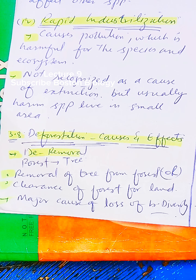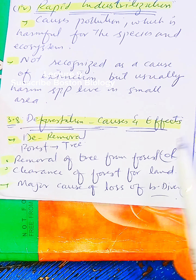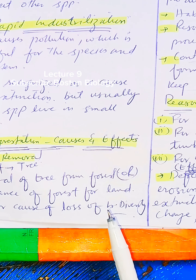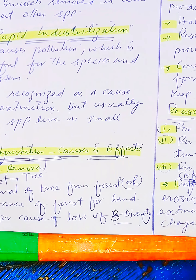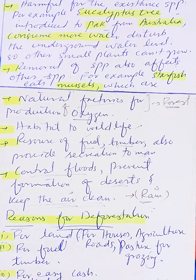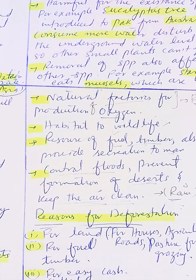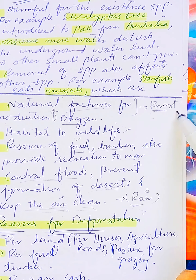The removal of trees is because of wood. The major effect of deforestation is the loss of biodiversity. The forest is the natural factory for the production of oxygen.